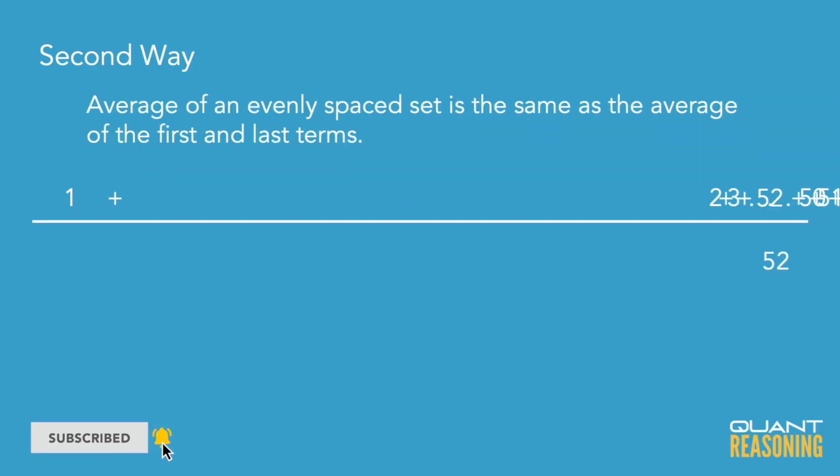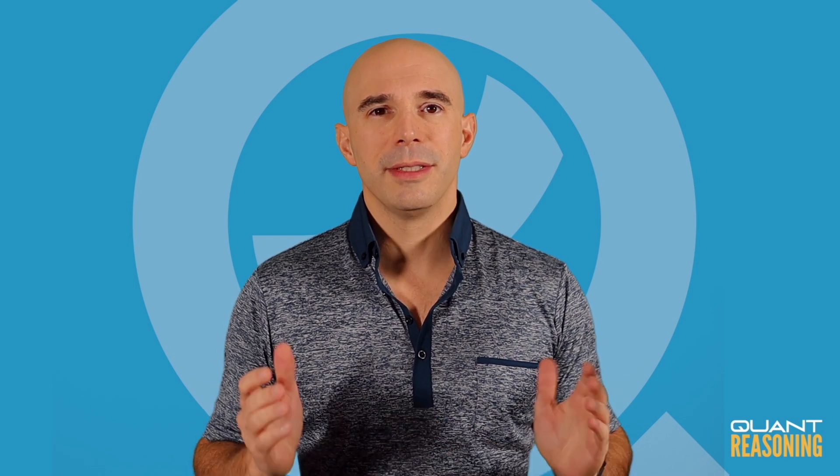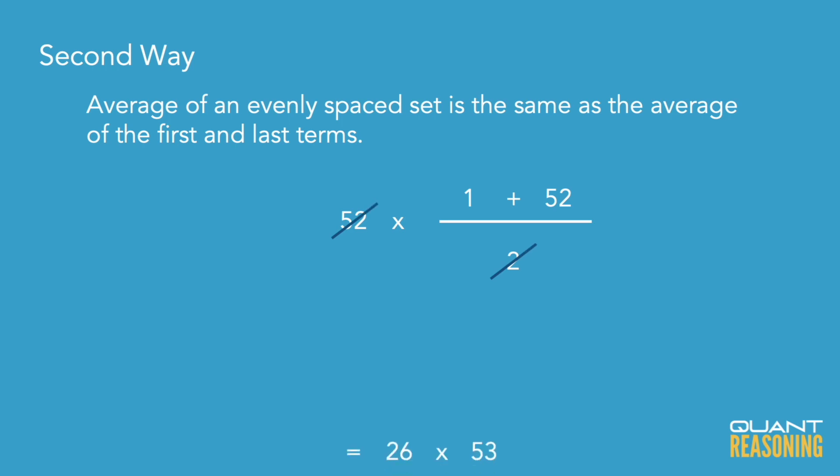This works because an evenly spaced set is symmetric, so all of the deviations from the center of the set will cancel out, and therefore the overall average of the entire set is going to be the same as just the average of the first and last terms. That's true for any arithmetic sequence or evenly spaced set. So in this case, the average of the entire set would be the average of 1 and 52 — so (1 plus 52) over 2 — and the number of terms is 52. We can reduce the factor of 2 in the denominator with a factor of 2 from the 52, and we end up with 53 times 26, the same product as with the other method.